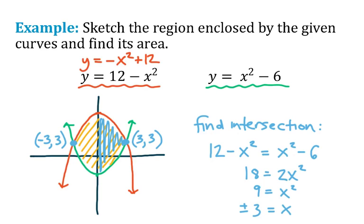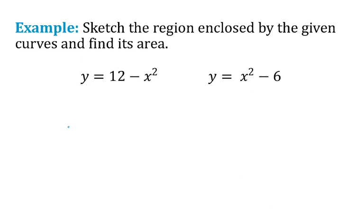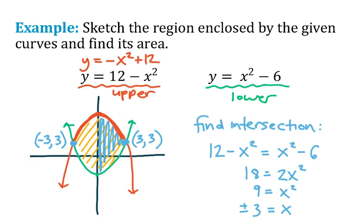So basically I need to remember that the 12 minus x squared is the upper function for this region of interest. And the x squared minus 6 is the lower function. So we'll be setting that up as an integral. So the area here will be found by integrating from a lower x value of negative 3 to an upper x value of 3.